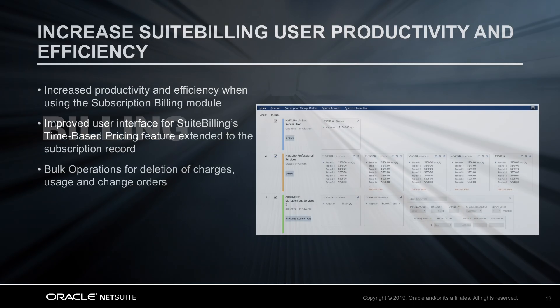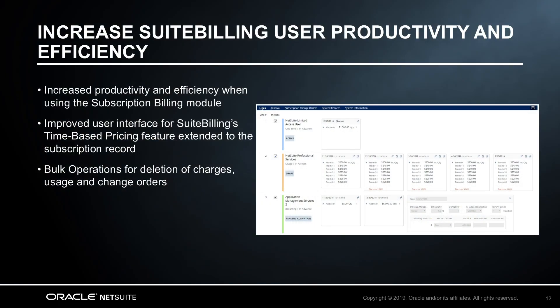Moving on to billing highlights. In the 19.1 release, suite billing customers using time-based pricing will see an improved user interface on the subscription record. Bulk operations for deletion of charges, usage, and change orders, also a suite billing enhancement, will increase user productivity when using the subscription billing module. This feature will provide the ability to delete incorrect, obsolete, or irrelevant subscription-related records in bulk or in batches, providing a flexible and easy way to clean up charges, usage, and change orders no longer needed in the system. Suite billing will provide competitive advantage to media firms who are evolving their business models.